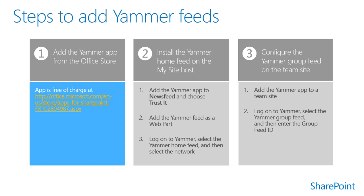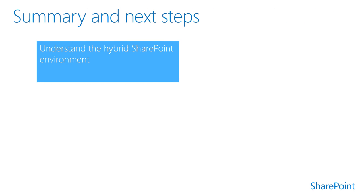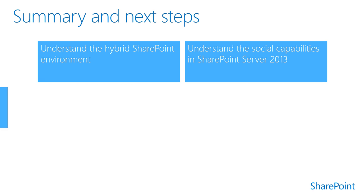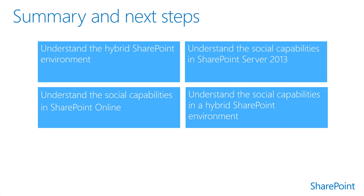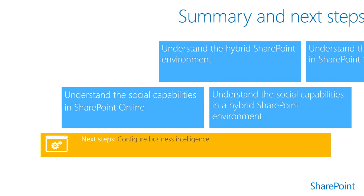After completing the integration process, you'll add the Yammer app to the app catalog and install and set up the Yammer feed on sites. Module 3.1 Social provided an overview of SharePoint 2013, SharePoint Online, and Yammer social capabilities. Module 3.2 Next provides an overview of business intelligence.